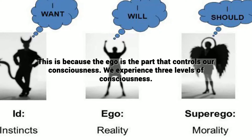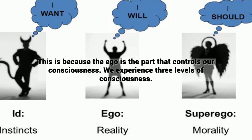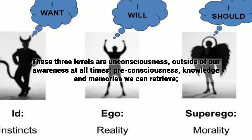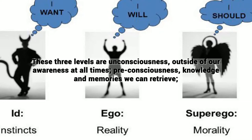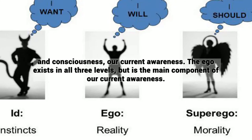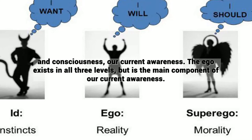We experience three levels of consciousness. The first is unconsciousness, which is outside of our awareness at all times. The second is pre-consciousness, which includes knowledge and memories we can retrieve. And the third is consciousness, our current awareness. The ego exists in all three levels, but is the main component of our current awareness.